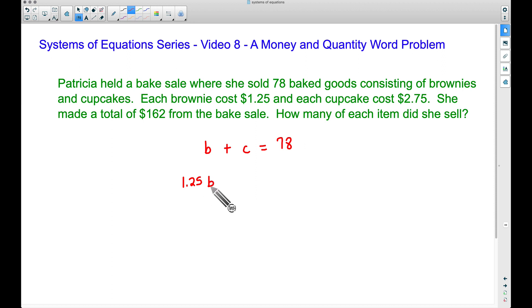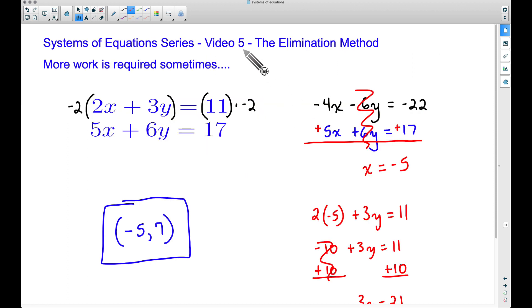Plus, we take the cost for each cupcake. Each cupcake costs $2.75, so if we take $2.75 times the number of cupcakes, which we called c, these two dollar amounts should total to $162. Now we have our two equations in our system of equations.